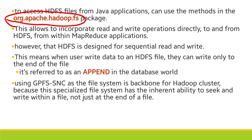HDFS is designed for sequential read and write only — sequential writing is easily supported. When a user writes data to an HDFS file, they can write only to the end of the file. However, the GPFS file system is a backbone for the Hadoop cluster because this specialized file system has the inherent ability to read and write within the file, not just at the end of the file.